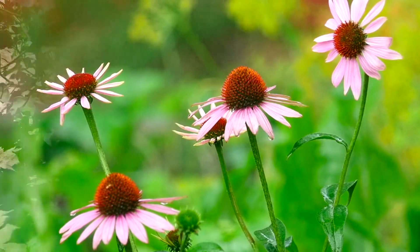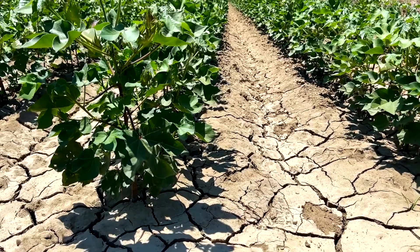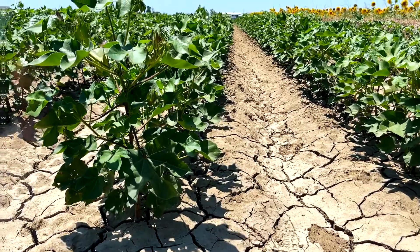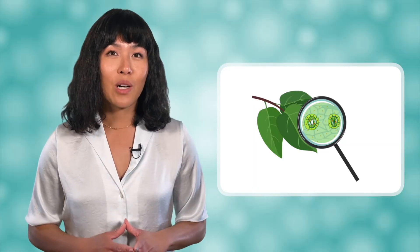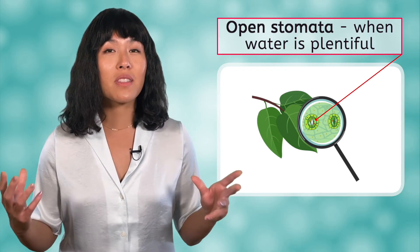But the plant does have to be able to control it, especially when water is scarce. This process is controlled through tiny openings in the leaves called stomata. When water is plentiful and the plant wants to let in carbon dioxide for photosynthesis to happen, it opens the stomata.